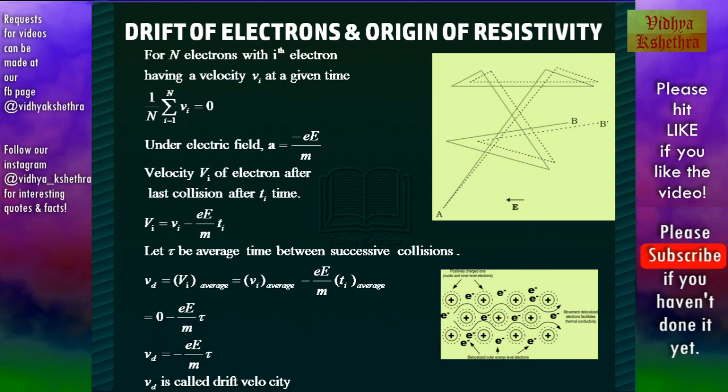So Vd = ⟨v'i⟩ = ⟨vi⟩ - eE/m ⟨Ti⟩. That is ⟨vi⟩ = 0. So 0 - eE/m × τ. So the drift velocity is Vd = -eE/mτ, which is the average time interval between successive collisions.